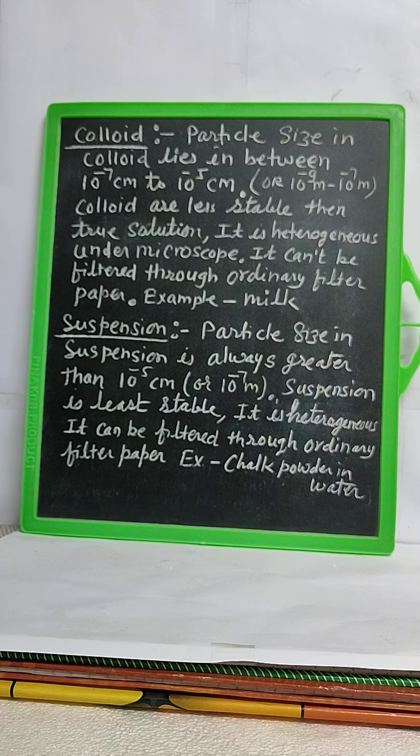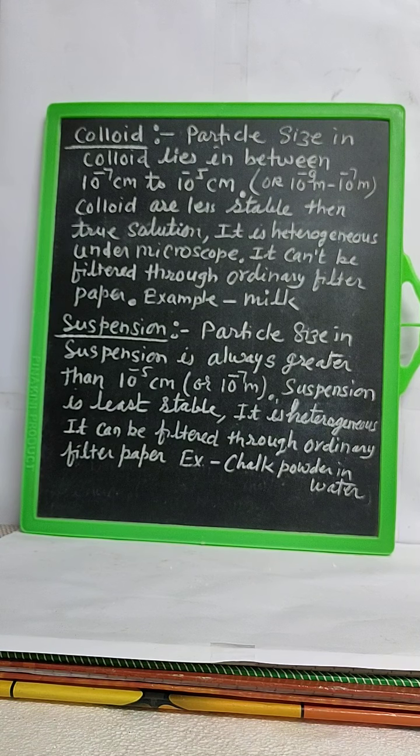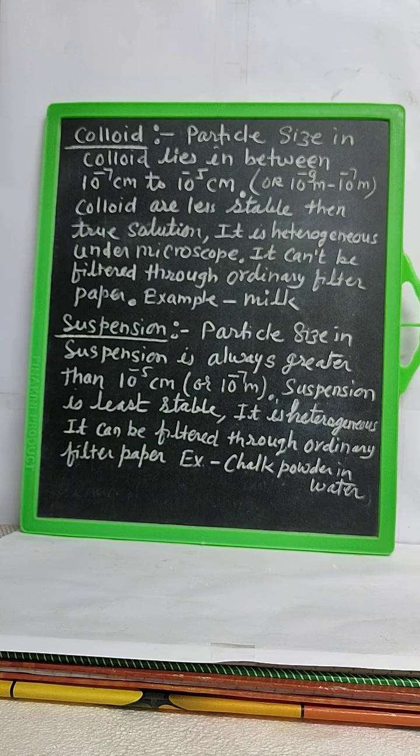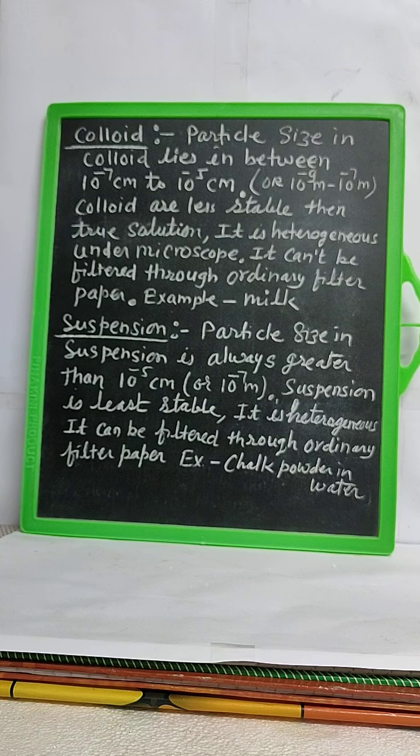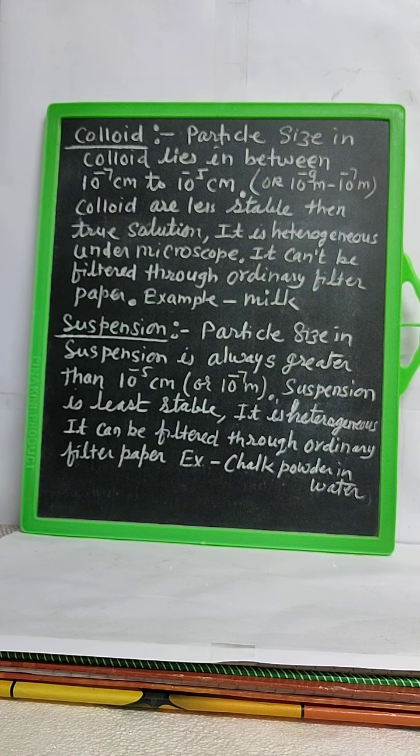Particle size in colloids lies between 10^-7 cm to 10^-5 cm. Colloids are less stable than true solutions.